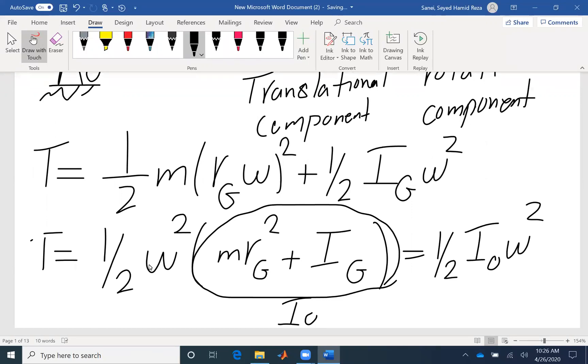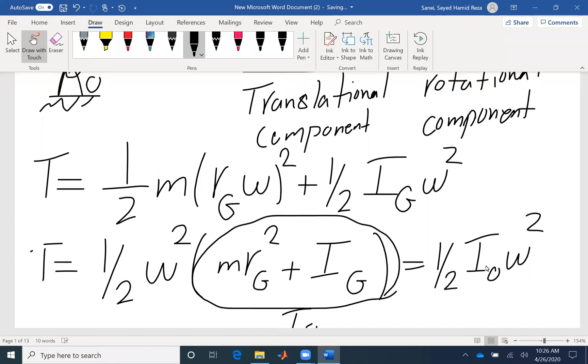That means I can write the kinetic energy equation based on IO, the moment of inertia about point O, or about center of gravity. If I write about center of gravity, then I need to include the velocity of center of gravity as well.